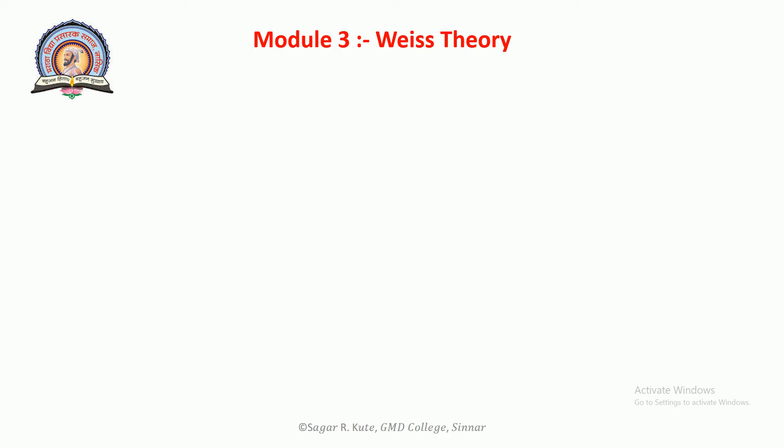Statement: Above the Curie temperature, ferromagnetic material behaves like paramagnetic material and has a well-defined magnetic susceptibility given by the Curie-Weiss Law. In order to explain the experimental facts about ferromagnetic material, Molecular Field Theory was suggested in 1907.